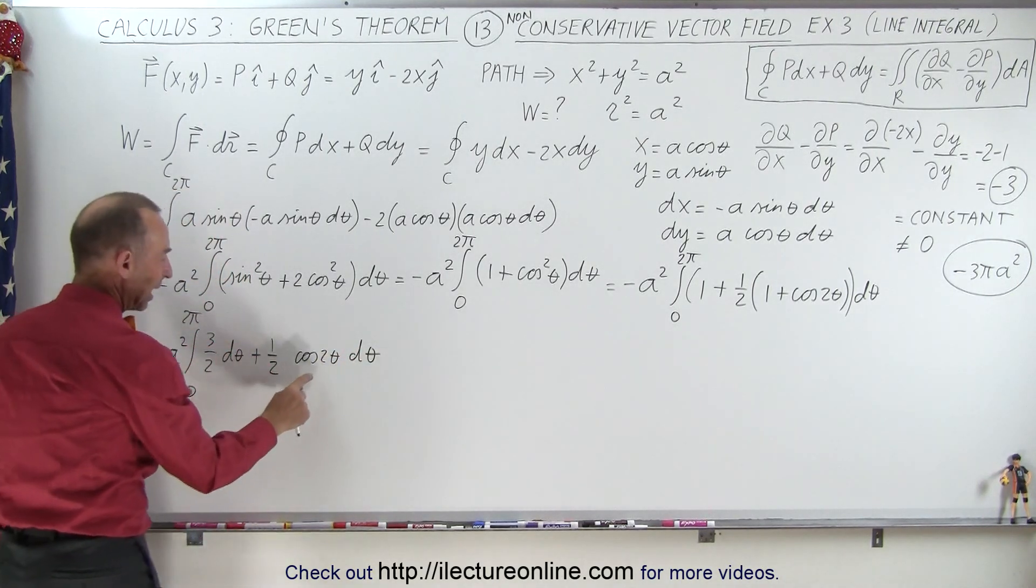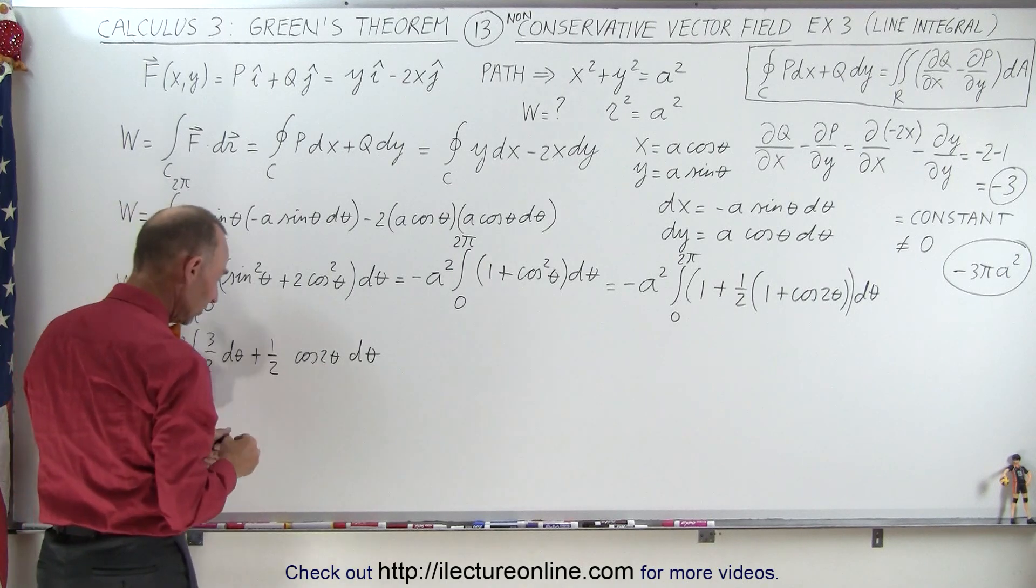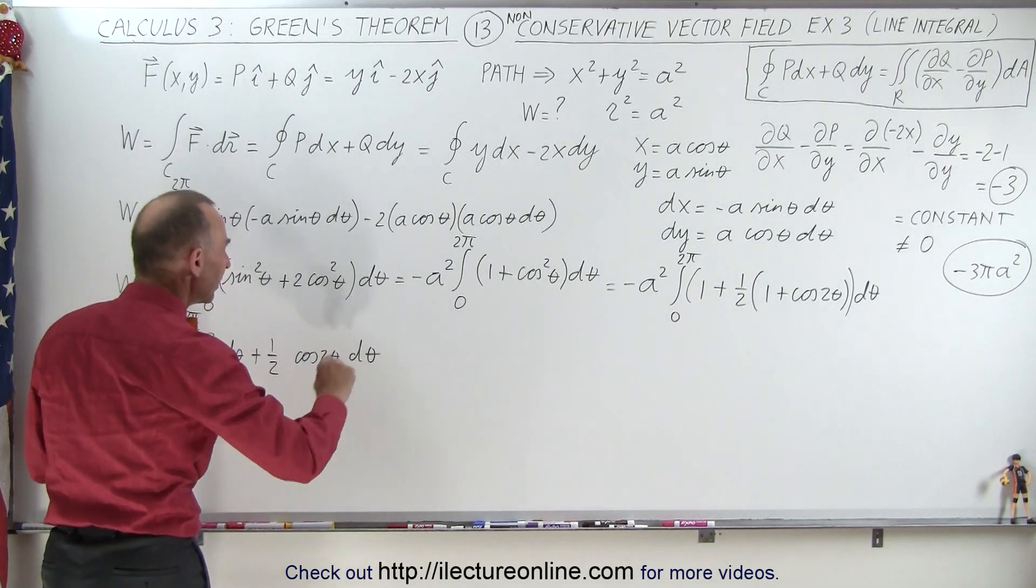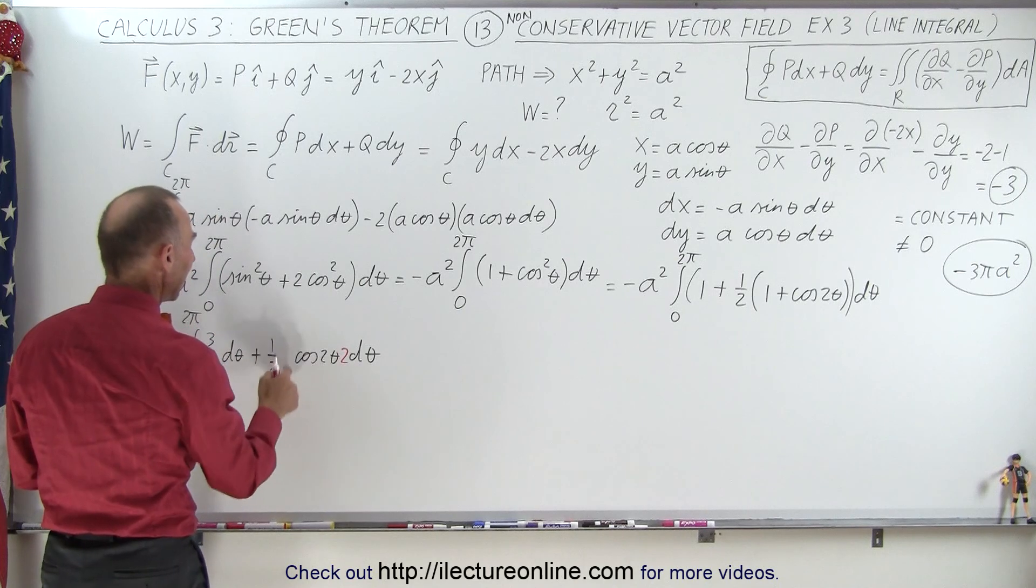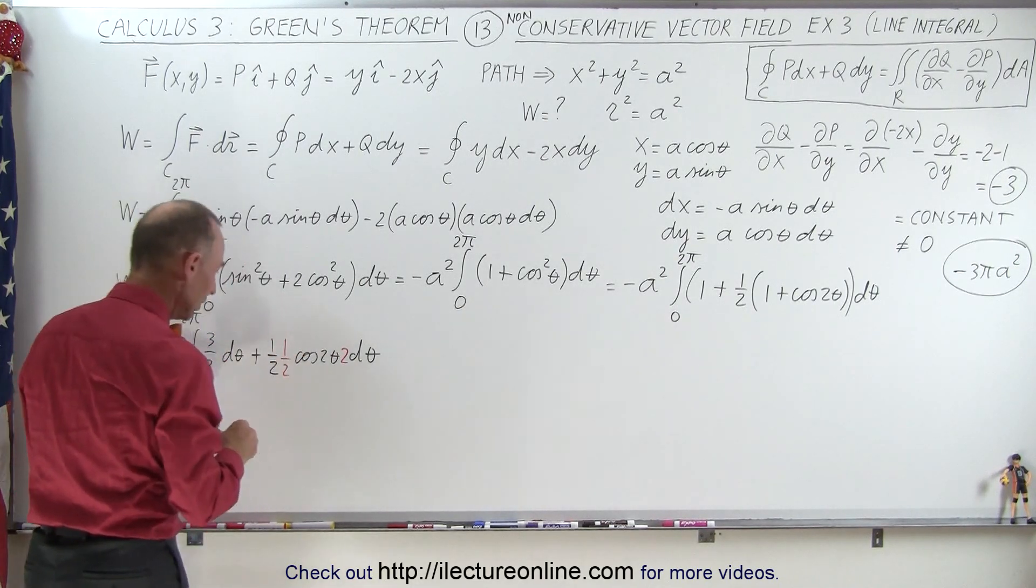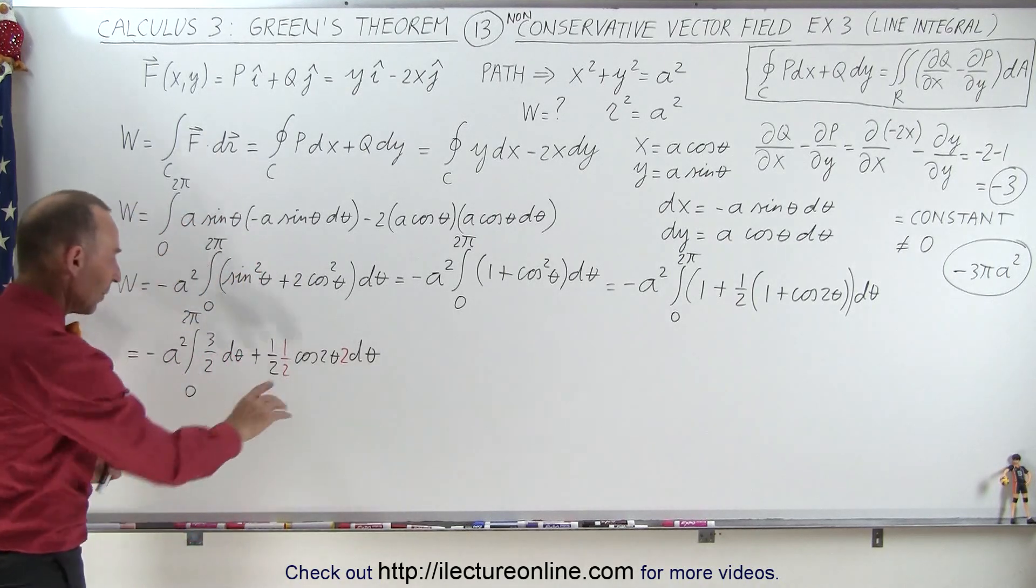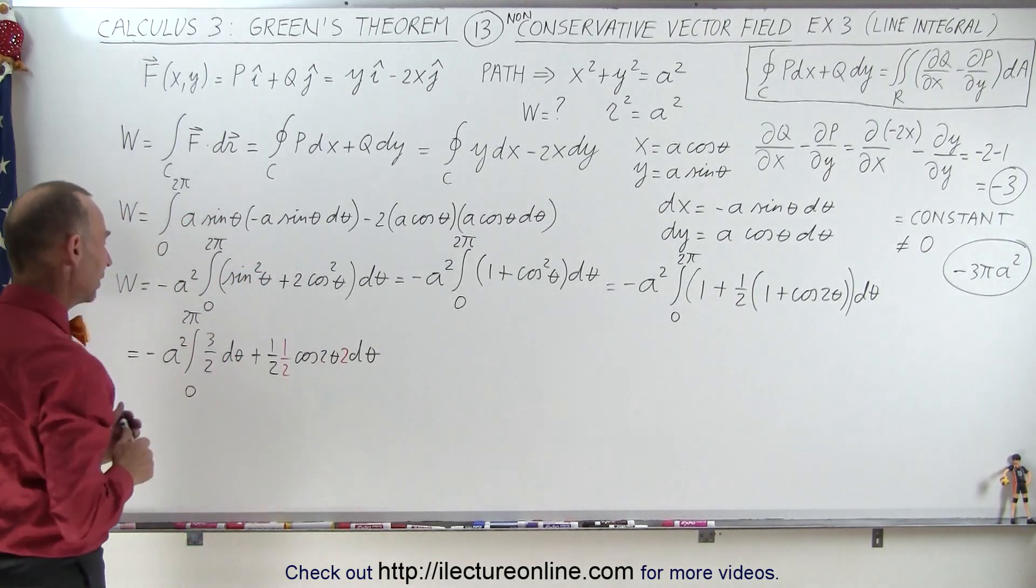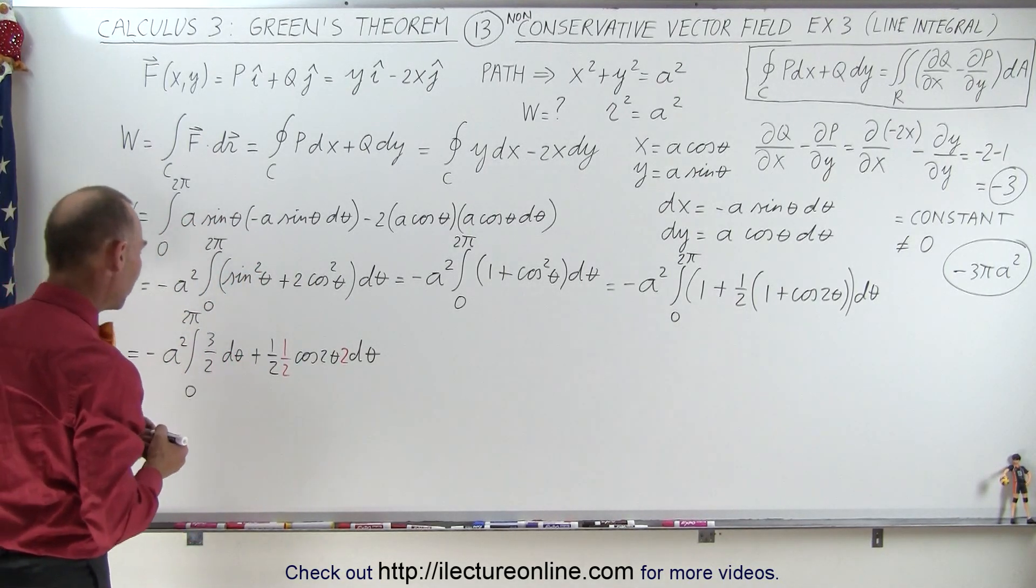Because here I have the cosine of 2 theta, which means I need a 2 d theta here to be able to integrate that. And if I multiply this times 2, I have to also divide it by 2, so I need a 1 half there as well. So now I can go ahead and integrate this, I can go ahead and integrate this, and I will end up with the following.